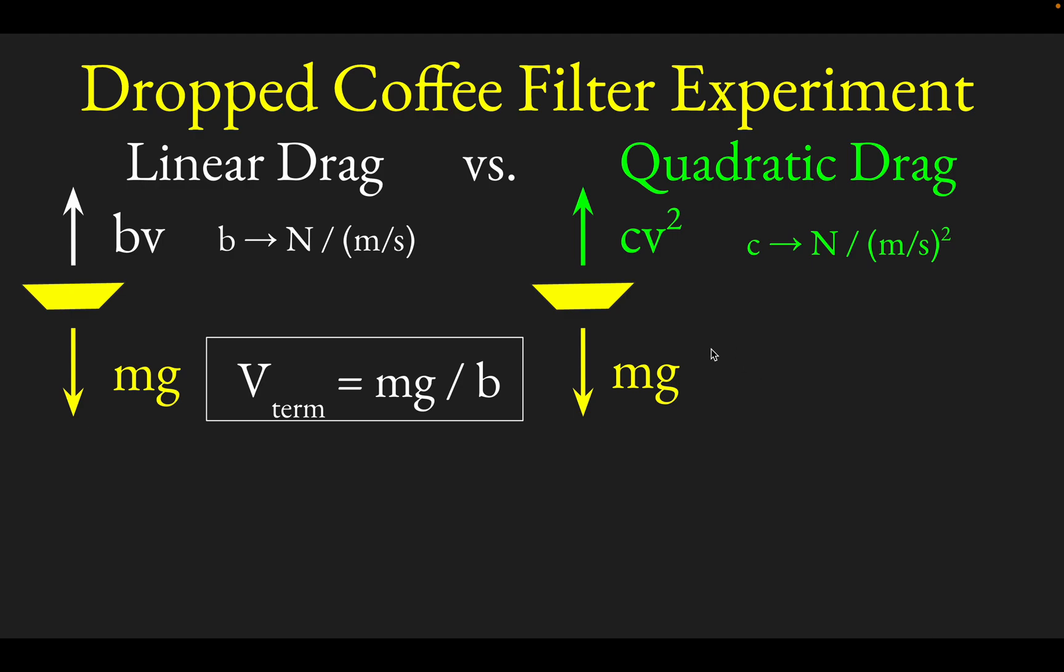In a quadratic drag model, you could find the terminal velocity by setting mg equal to CV squared. In that case, you would find out that V terminal is not just mg over C, but actually root mg over C. That just comes from setting mg equal to CV squared.